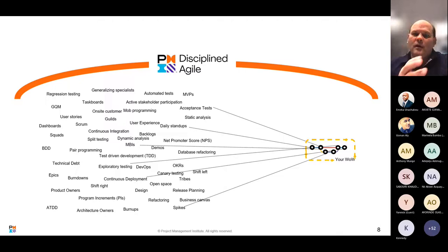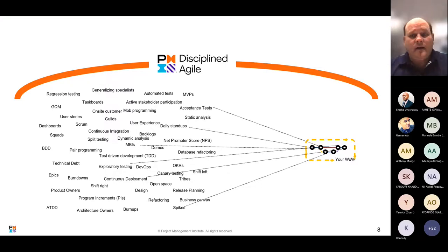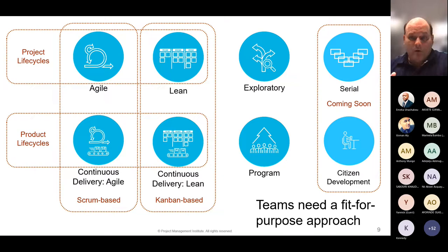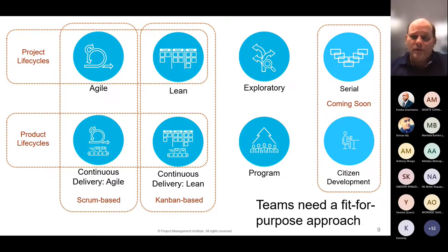My team will have our way of working that meets our needs; your team will have your way of working that meets your needs. As our situation evolves and we learn, we'll change up our way of working to address new situations. That's the basic idea: how do you develop a fit-for-purpose strategy for your situation? Teams need a fit-for-purpose approach — one size does not fit all — but they also need starting points.